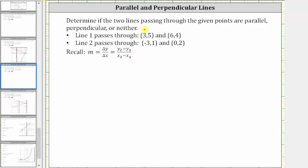Let's call the first ordered pair x sub one comma y sub one, and the second ordered pair x sub two comma y sub two. We will call the slope of the first line m sub one. m sub one equals the quantity y sub two minus y sub one, which is four minus five, divided by the quantity x sub two minus x sub one, which is six minus three. Simplifying, four minus five is negative one, and six minus three is three. The slope of the first line is negative one third.